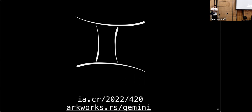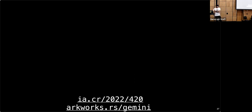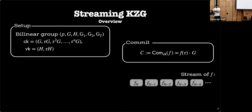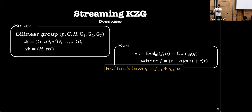Question: did you look at other streaming-friendly polynomial commitments beyond KZG? In KZG the key property is division by a low-degree polynomial, which enables easy streaming. Moving to the Lagrange basis with high-degree divisors makes streaming unclear. PST (which also has trusted setup) can also support streaming. Bullet-proof-like or FRI-based schemes are more like inner products and can similarly support streaming in an analogous way.